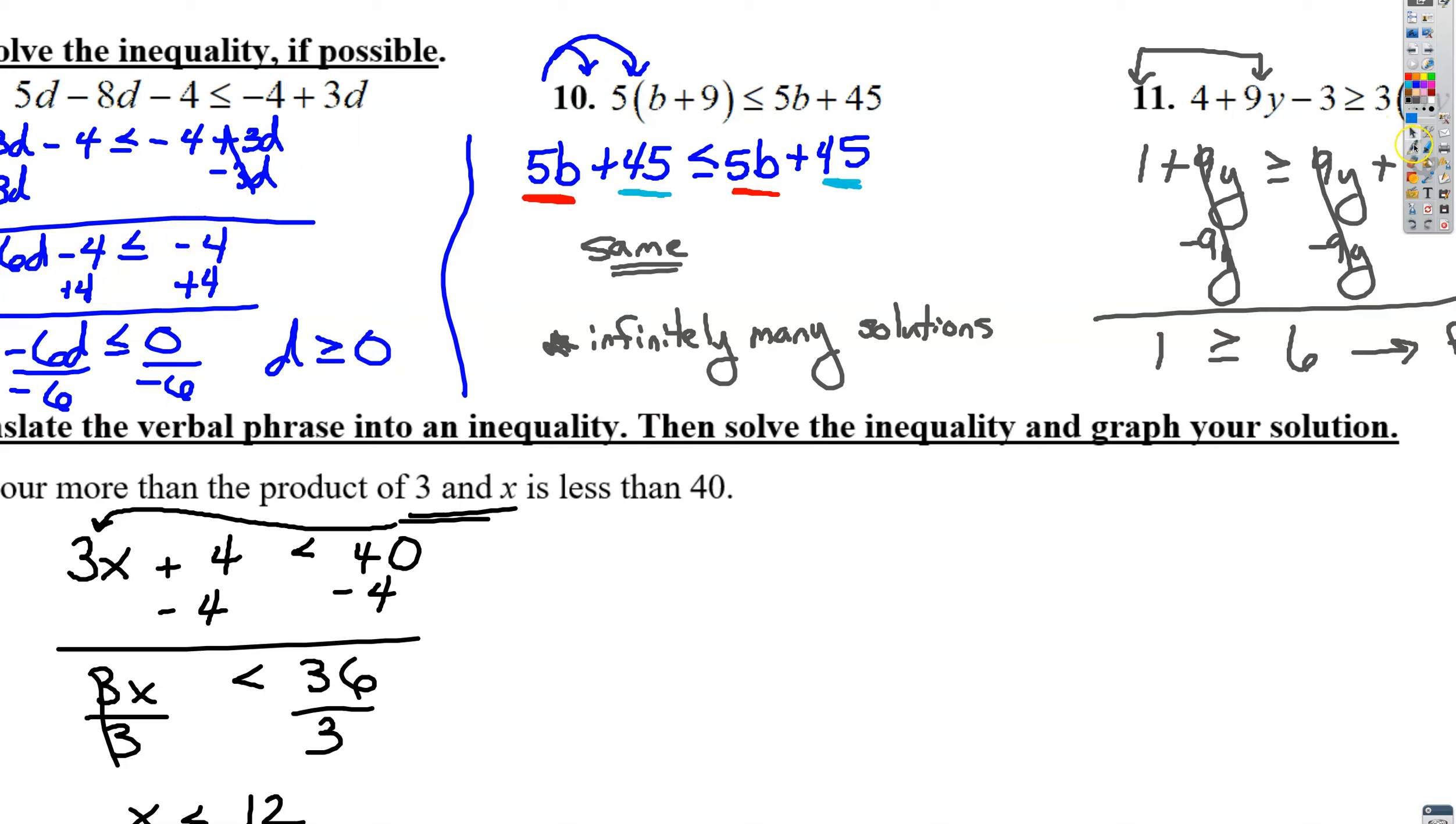A lot of students freak out when they see this zero. You're allowed to have equations equal to zero or inequalities with zero. We just continue solving. We get rid of the negative 6 by dividing both sides by negative 6. Big key thing is you need to flip the sign when you divide by negative 6, so it was less than or equal to, it becomes a greater than or equal to. And then zero divided by anything is just zero.